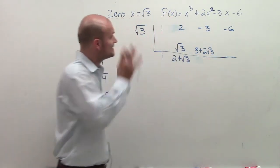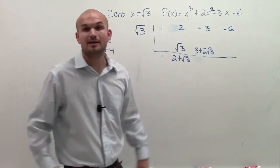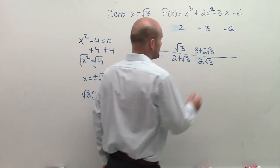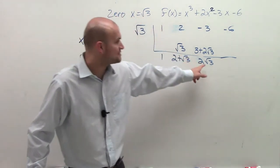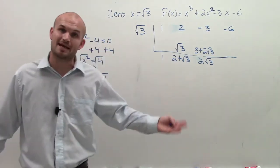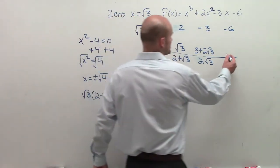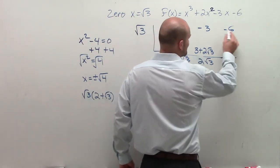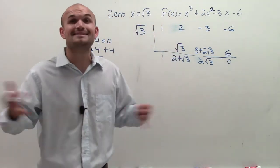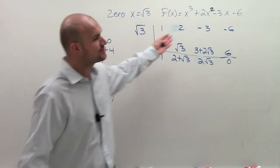Then, as I add these up, negative 3 plus 3 plus 2 square root of 3 is just going to leave me with 2 square root of 3. Square root of 3 times 2 square root of 3, I can only multiply the square root of 3 times the square root of 3, which gives me again 3. 3 times 2, which is 6. Negative 6 plus 6 equals 0. Now I knew that was going to happen, because if it's a zero, it has to divide into it. So I know those are going to be my coefficients.